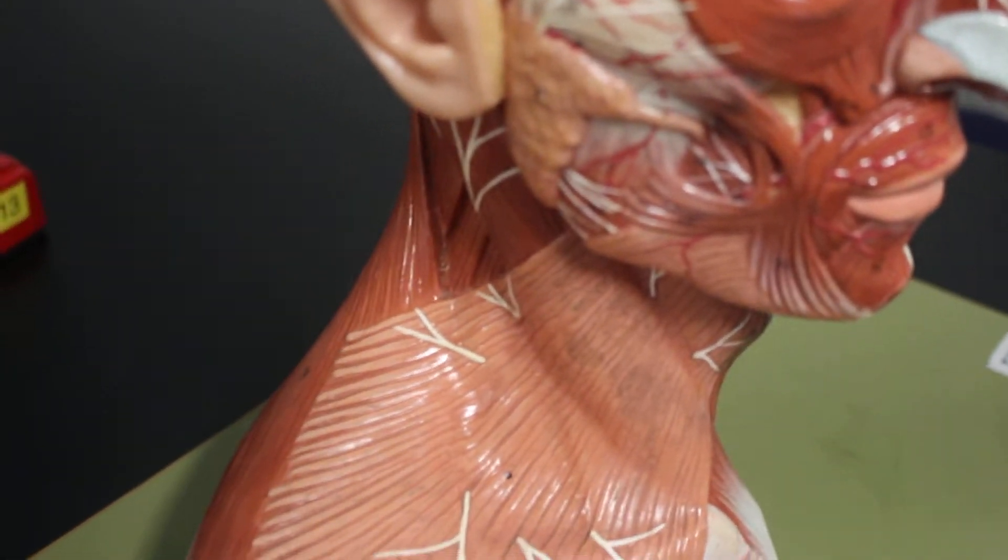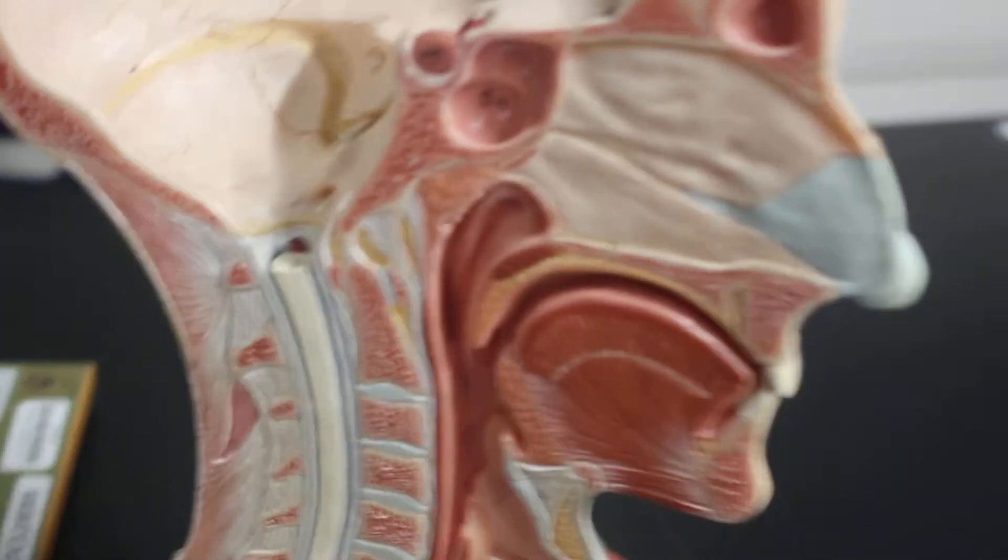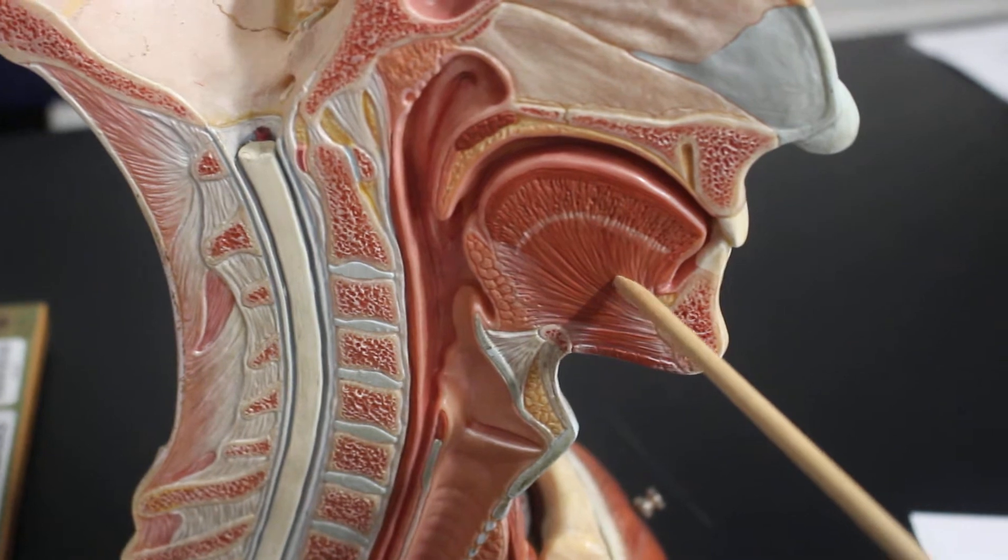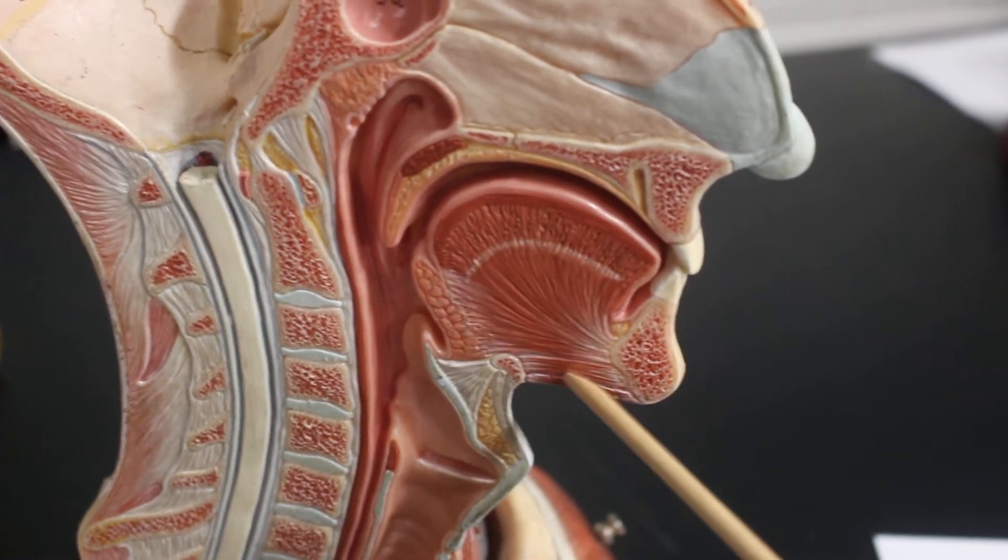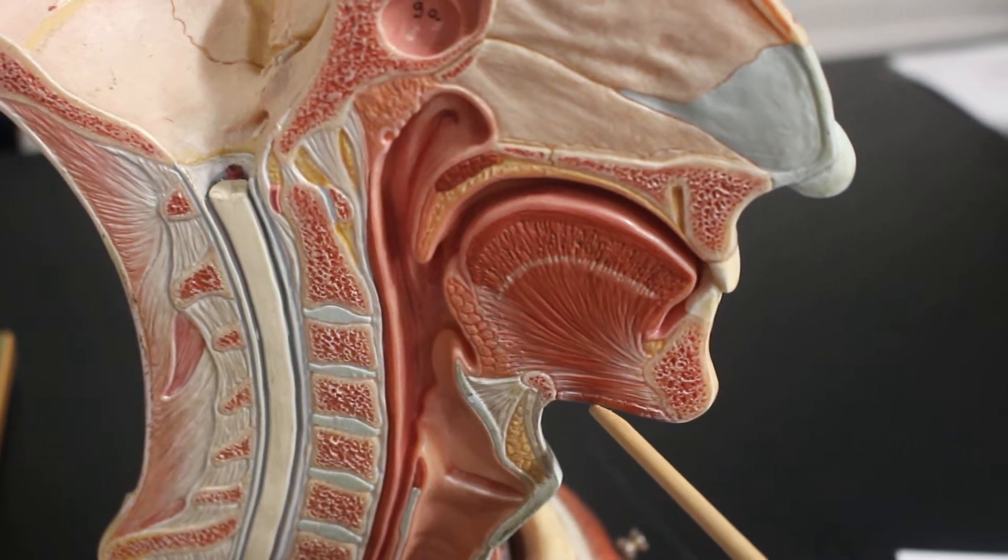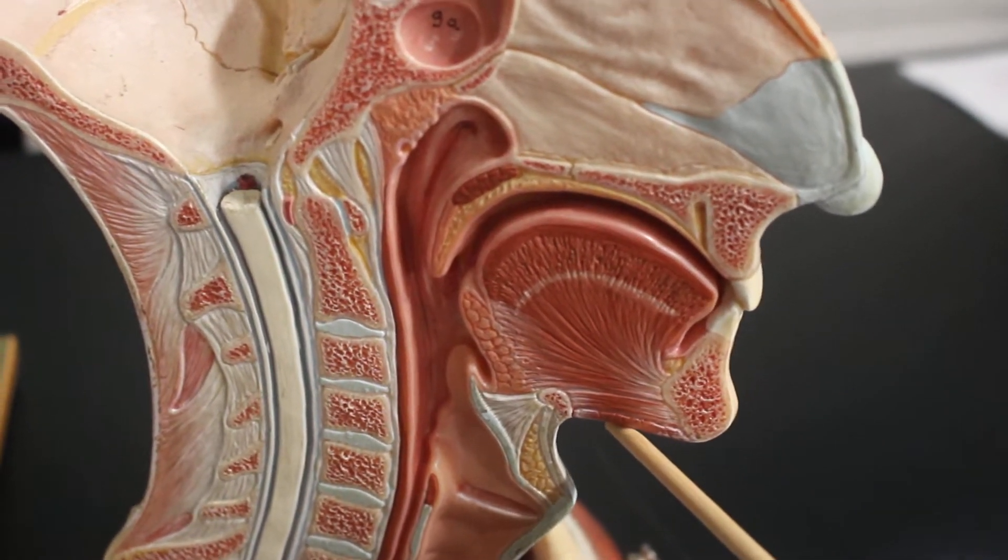From here we go inside the head. So here's a view inside the head. This here is genioglossus going to the tongue. And below that here is geniohyoid going to the hyoid bone. And then below that the lowest layer here is mylohyoid.